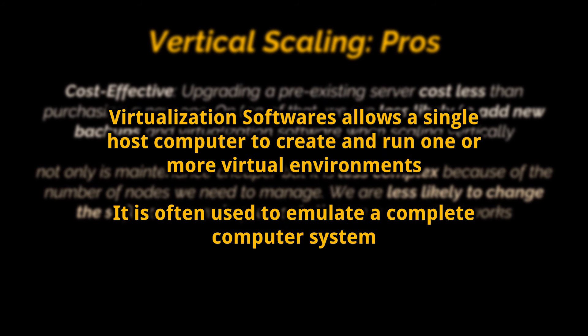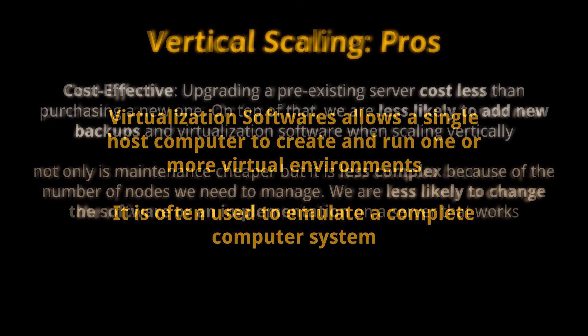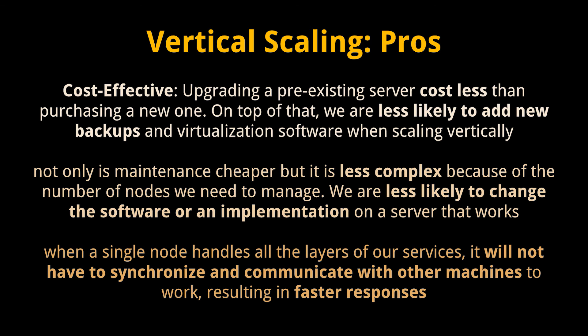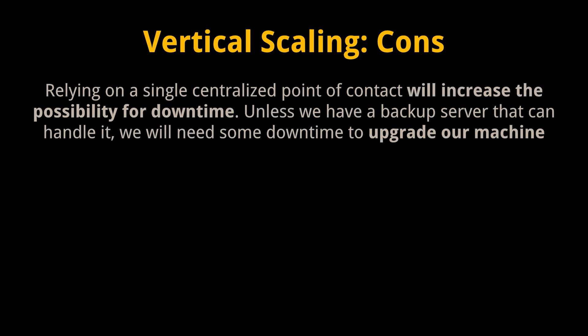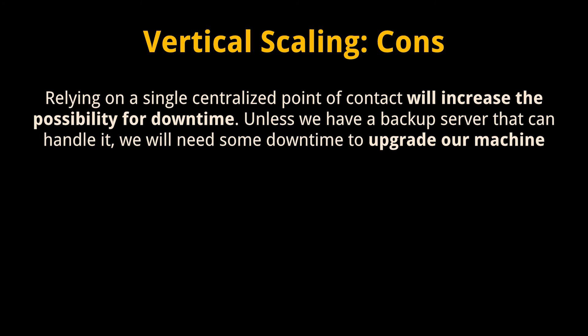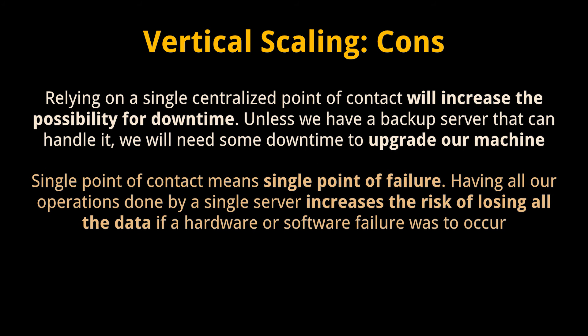Since we mentioned virtualization a couple of times: virtualization software allows a single host computer to create and run one or more virtual environments, and is often used to emulate a complete computer system. Back to vertical scaling — one of its main advantages is less complex process communication. When a single node handles all the layers of our services, it will not have to synchronize and communicate with other machines to work, which may result in faster responses. However, relying on a single centralized point of contact will increase the possibility of downtime. Unless we have a backup server, we will need considerable downtime to upgrade our machine, and a single point of contact means a single point of failure — increasing the risk of losing all data if a hardware or software failure were to occur.